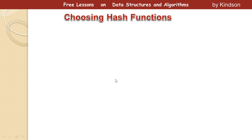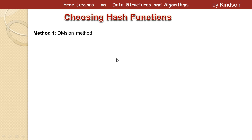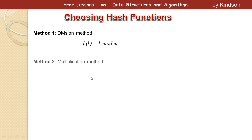How do you choose hash functions? There are two methods we are going to discuss. Take a pen and paper and write them down. The first one is called the division method. The division method says that h(k) = k mod m, where m is the number of slots in the table.